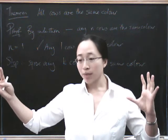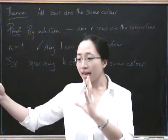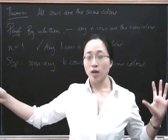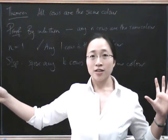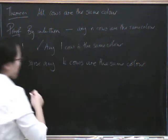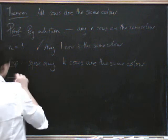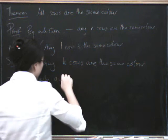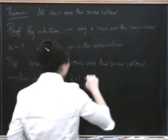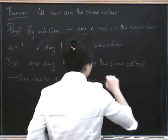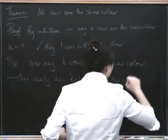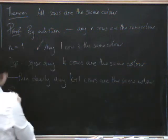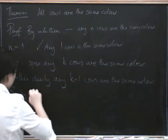Because if you've got k plus one cows and you want to know whether they're all the same color, you know that if you pick any k of them, those k would be the same color. So all k plus one of them would have to be the same color. So that's the step: suppose any k cows are the same color, then any k plus one cows are the same color. So by induction...